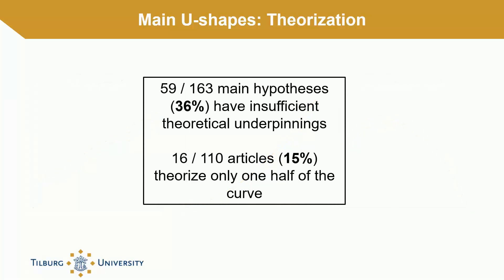We find, however, that out of 163 main hypotheses, 36% have insufficient theoretical underpinnings, and that 15% of articles actually only theorize one half of the curve rather than the curve in its entirety.